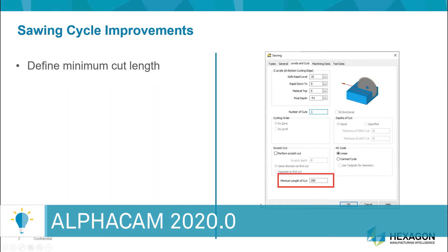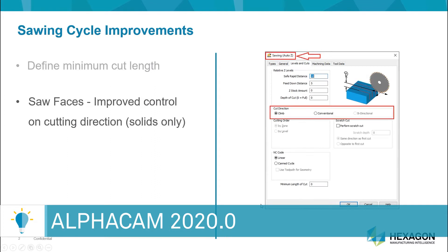Number two, we've enhanced our interaction with solids so that you can automatically define the cut direction, and this is going to be based on the rotation that you define in the saw. This gives you even additional productivity when working with solids.